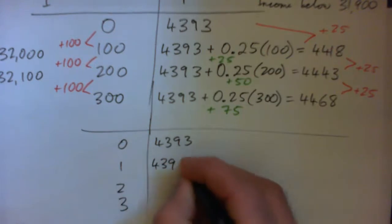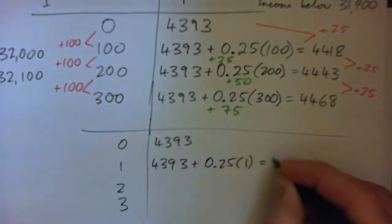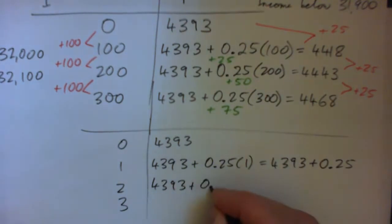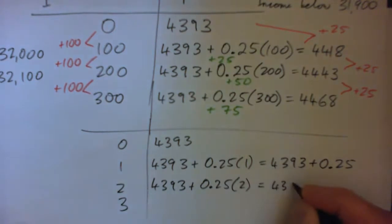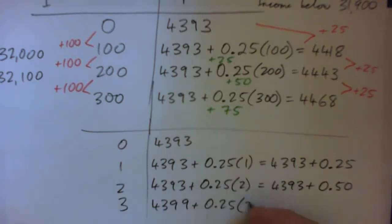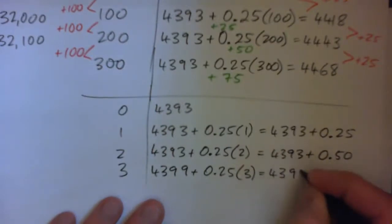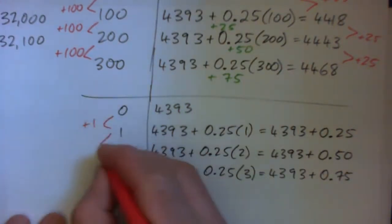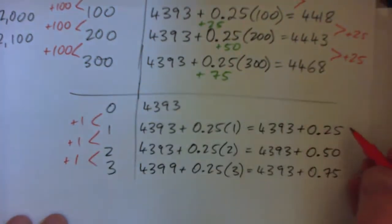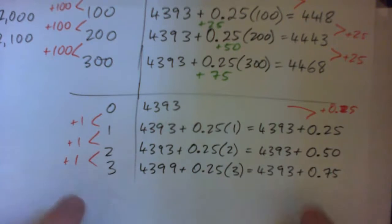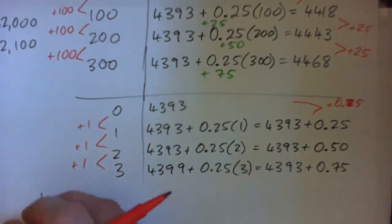Dollar by dollar: $4,393 plus 0.25 times 1 is $4,393 plus 25 cents; $2 over gives $4,393 plus 50 cents; $3 over gives $4,393 plus 75 cents. So for every extra dollar in taxable income we're paying an extra 25 cents — that's the marginal tax rate.